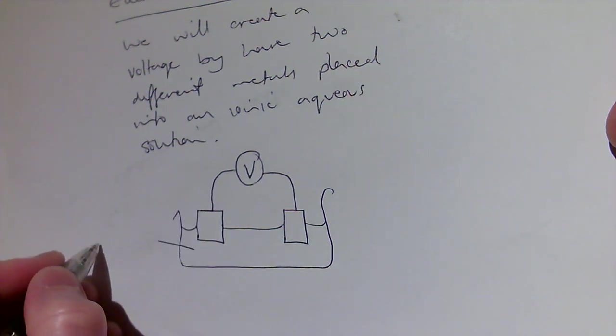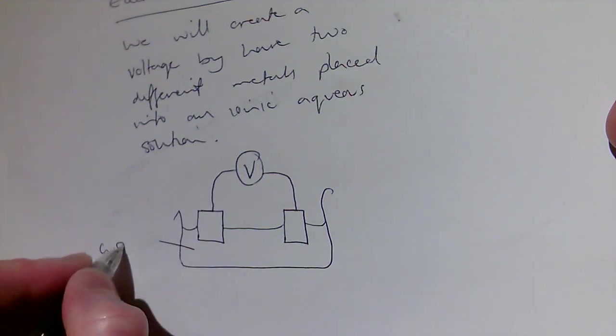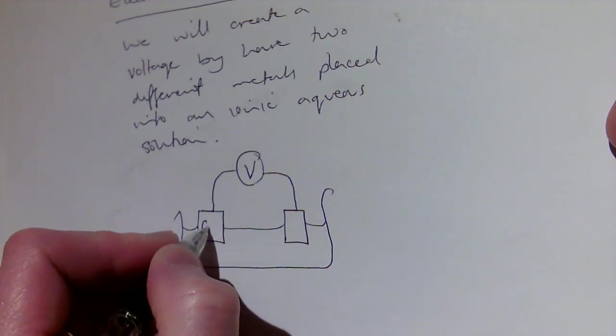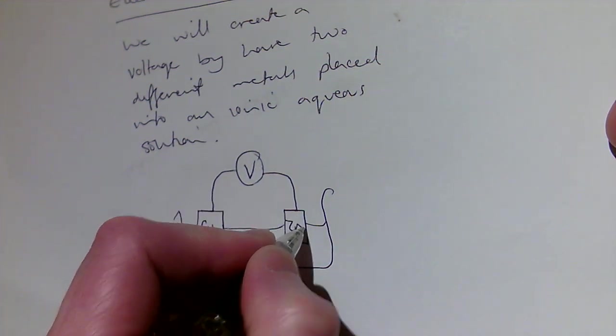Okay, there we go, let's have a bit, what should we have in there, a bit of CuSO4 aqueous, and then let's make that our copper electrode and let's make that a zinc electrode.